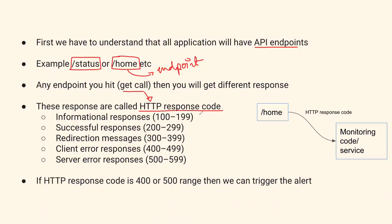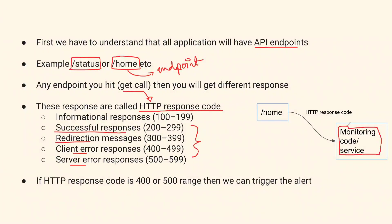Here are some important HTTP response code ranges: successful responses are 200 to 299; redirection from one API to another is 300 to 399; client error is 400 to 499; and server error is 500 to 599. We will write a small script or set up a monitoring service that checks this response code when we make a call to the API endpoint.